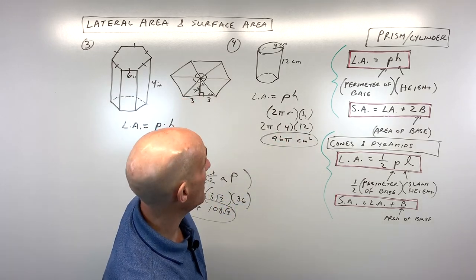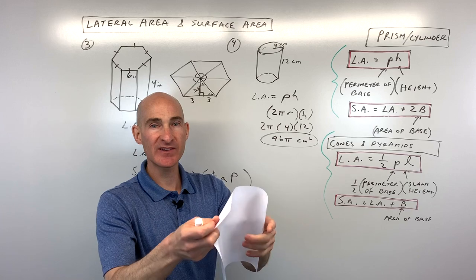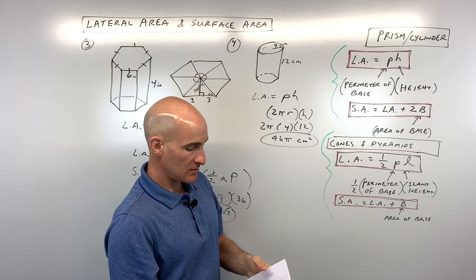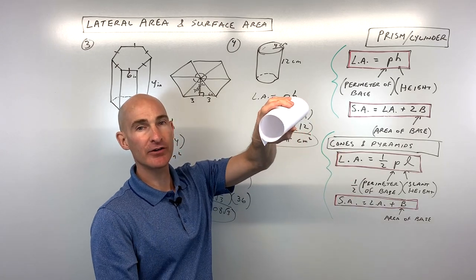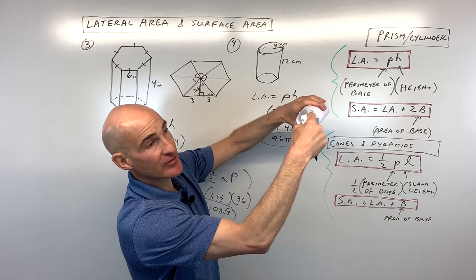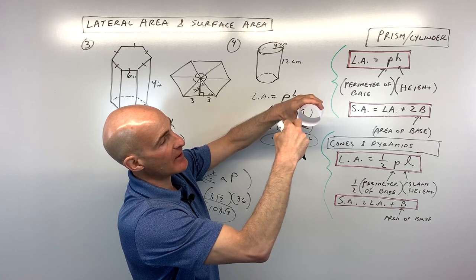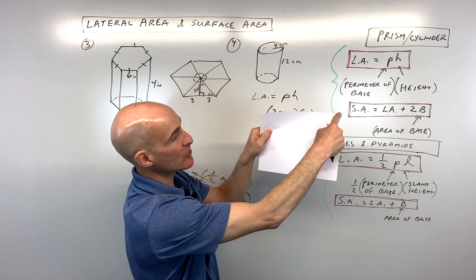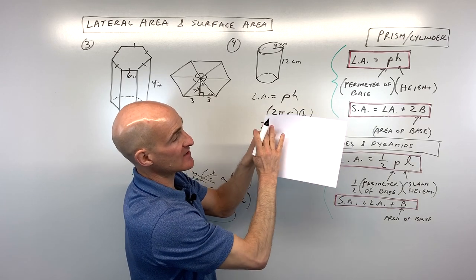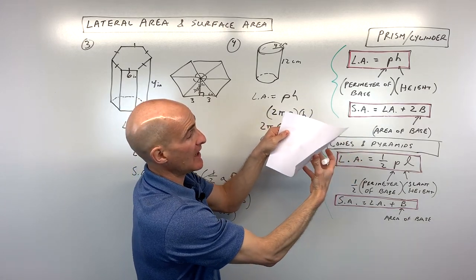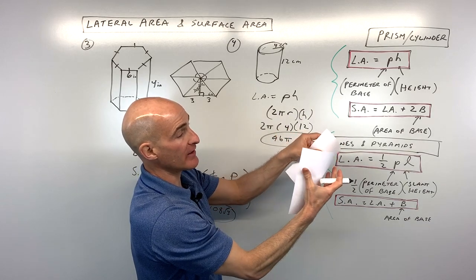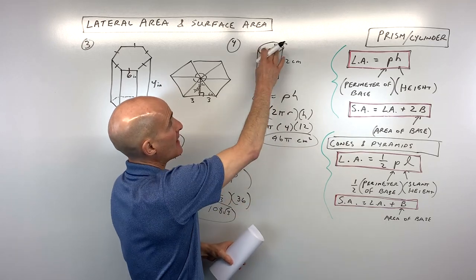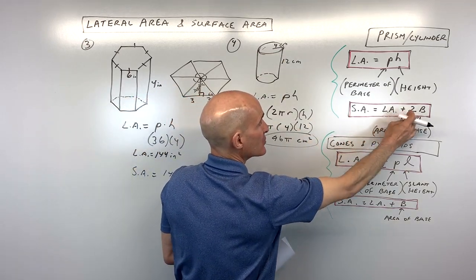To visualize this, if you cut a cylinder and unroll it, the circumference of the circle becomes the width of a rectangle and the height stays the same — that rectangle is the lateral area, the area of the sides. Now we add the two circular bases to find the surface area.